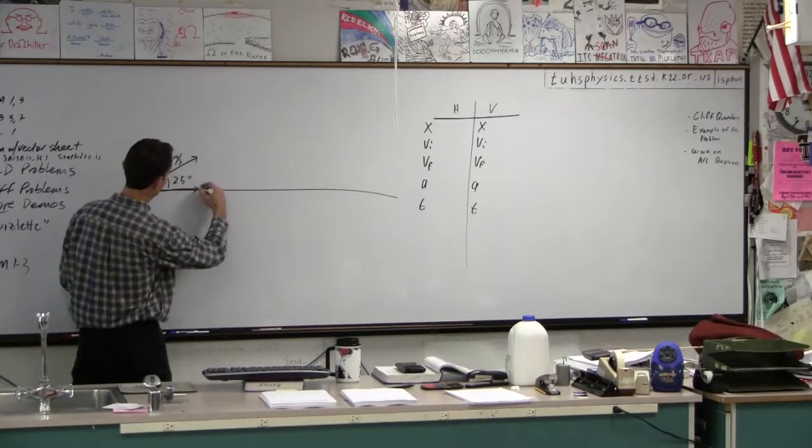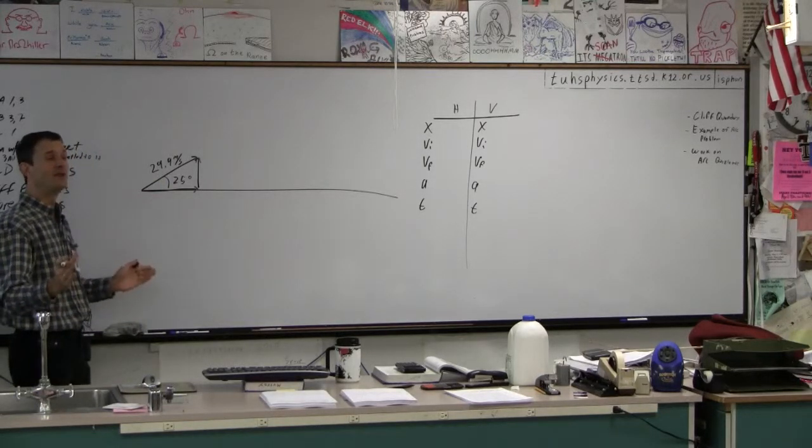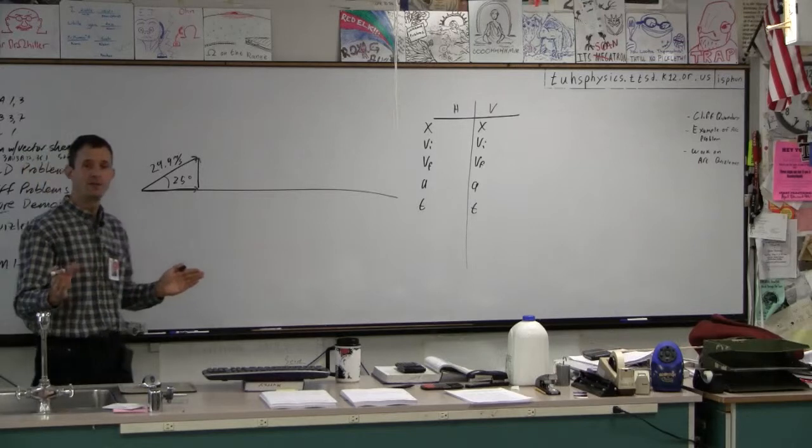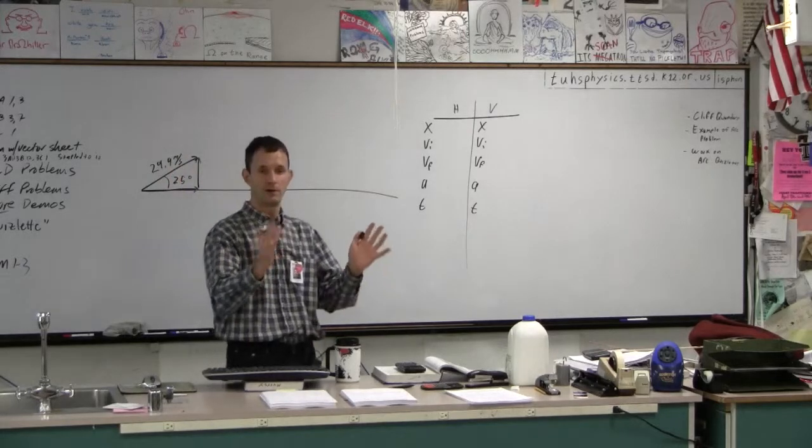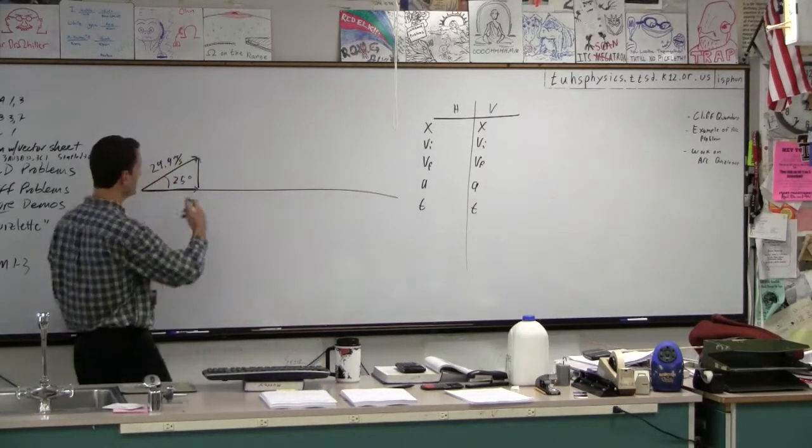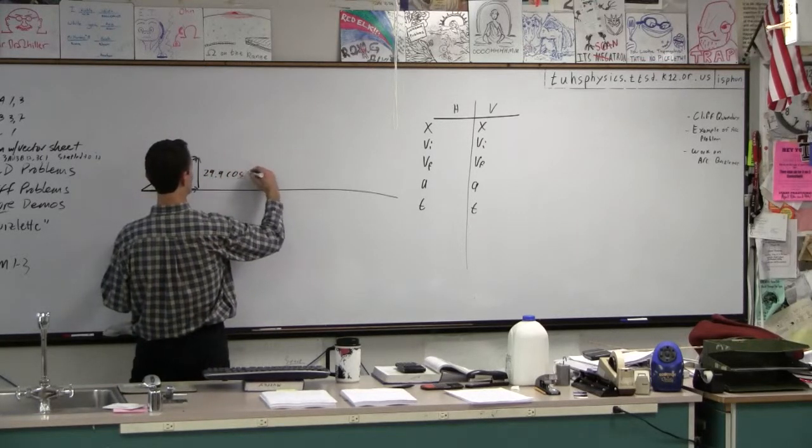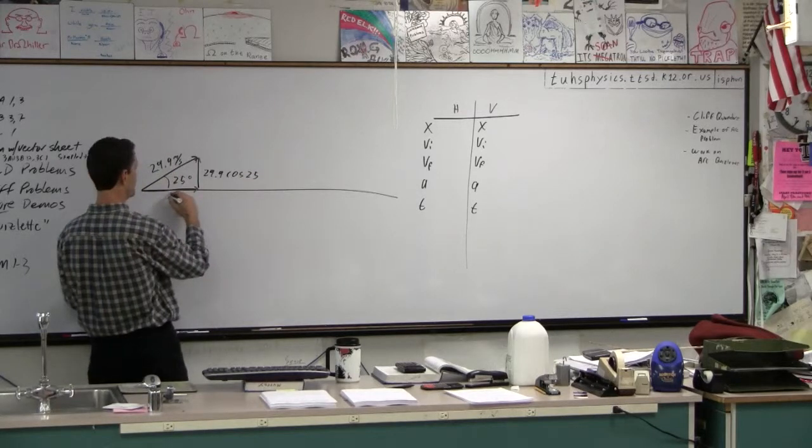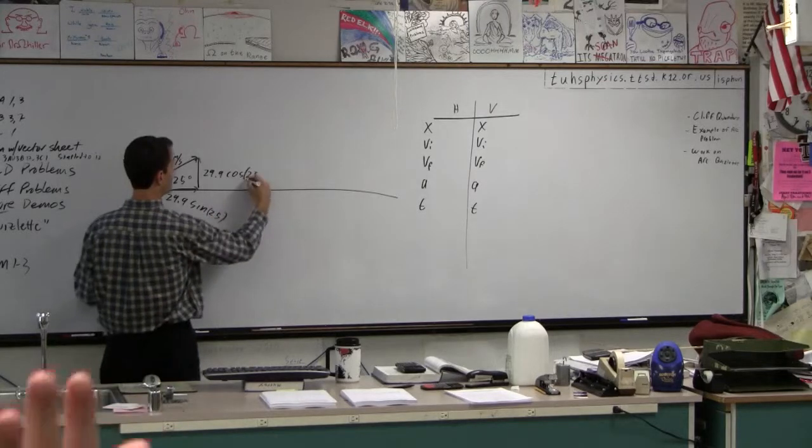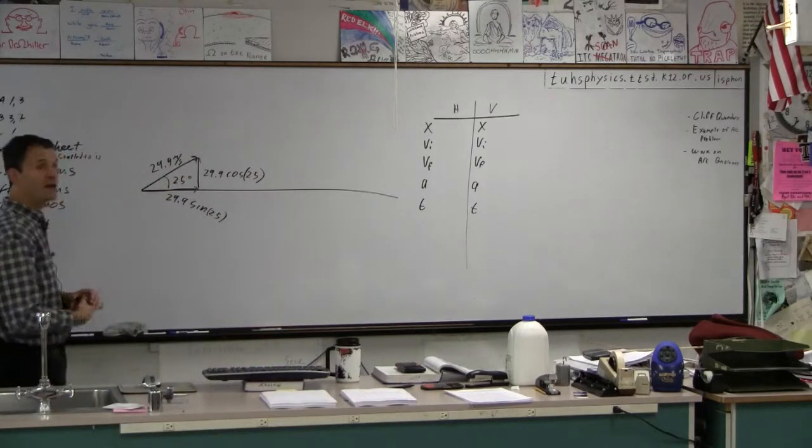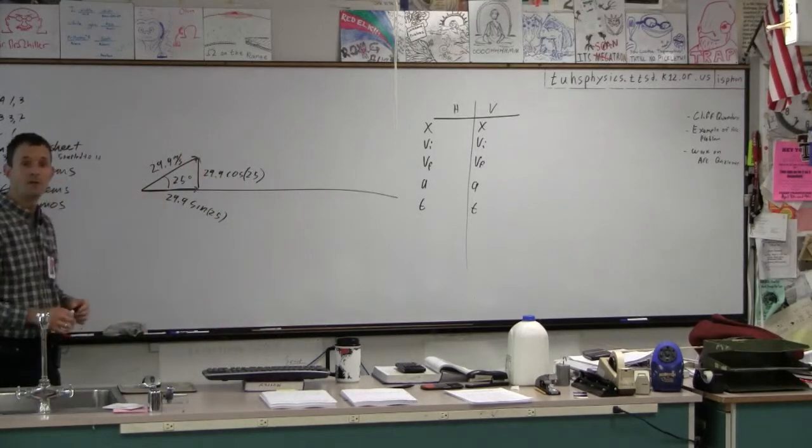So this is what we're going to do. If they give you an angle magnitude vector, the first thing you do, and you always do this, you can never do anything with an angle magnitude vector. You always have to break them into components. So let's break this thing into components. This guy here is 29.9 cos 25. This one here is 29.9 sine 25. So figure that out. Take your calculator, take your notes, figure out those things, and write them down on your paper.